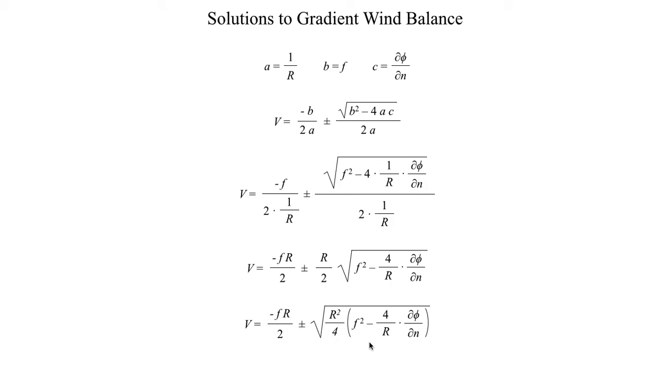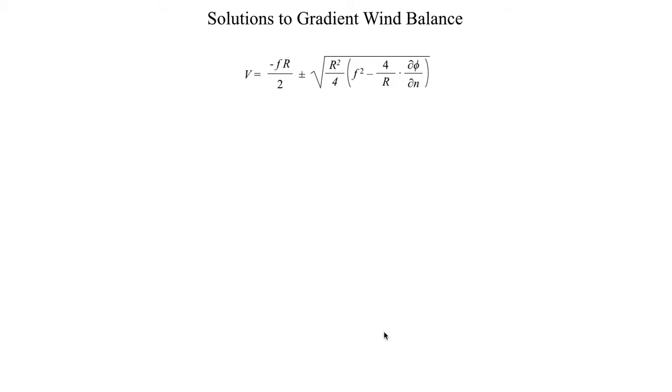By bringing that term inside of the radical, we can distribute this R²/4 to this bit of subtraction here. We end up with V equals minus fR/2 plus or minus the square root of f²R²/4 minus R times dφ/dn. Still a little bit messy, but it's not nearly as bad as what we started with.